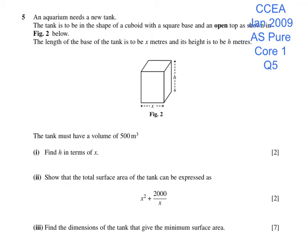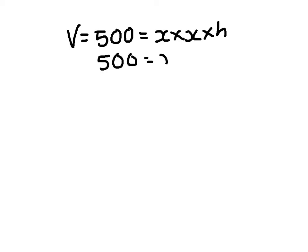January 2009, Core 1, Question 5. The volume, which is 500 of a cuboid, is length times breadth times height. So 500 equals x squared h. h must be 500 over x squared.